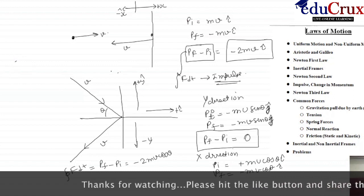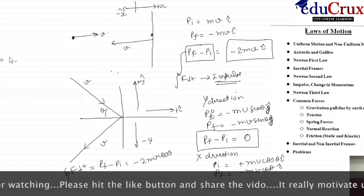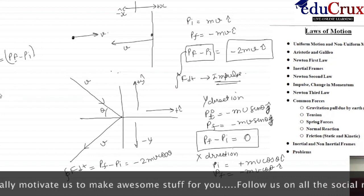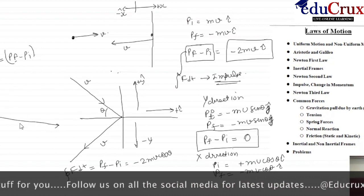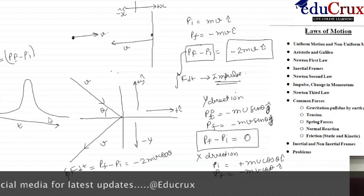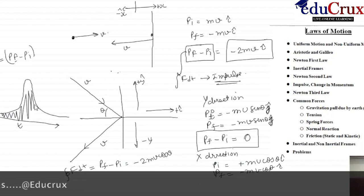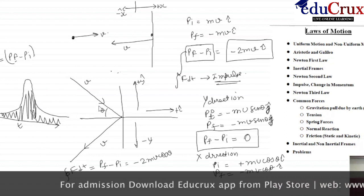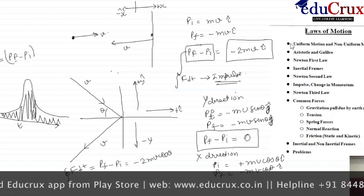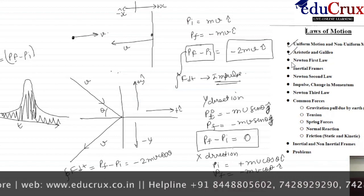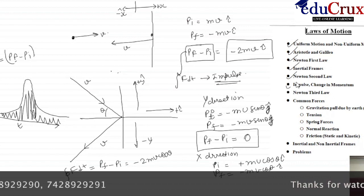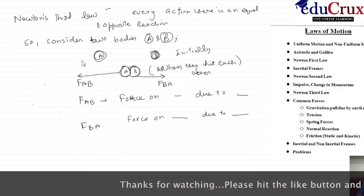To remind you once again: impulse is nothing but the change in momentum — the change between the final and initial momentum. From the force-time graph, we can calculate impulse by calculating the area under the curve. Now we will start Newton's third law. Let us understand Newton's third law of motion, which states that to every action there is an equal and opposite reaction.